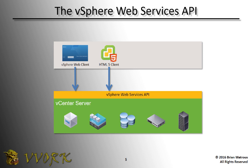Let's take a few moments to explore how Orchestrator interacts with vSphere. In the vSphere world, your vCenter servers have an application programming interface called the vSphere Web Services API. That API is used by all sorts of external tools, many of which you already know, such as the vSphere Web Client and the HTML5 Client. This API allows your vCenter server to enable external programs to do things in the vSphere world.